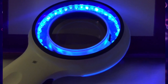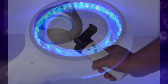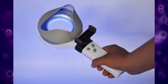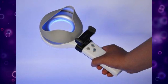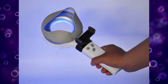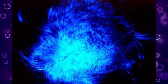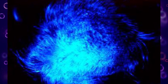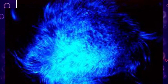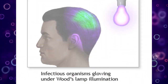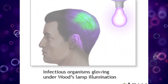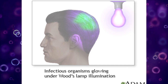American physicist Robert Wood invented what is now called the Wood's Light, or Wood's Lamp. The Wood's Lamp is a source of long-wave ultraviolet light, and can be used to detect the fluorescence in hair, which is a feature of infection by some dermatophytes.